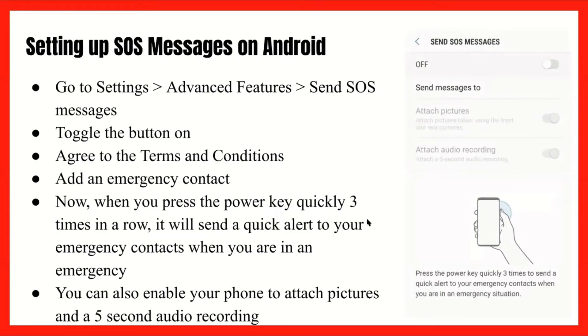First, we'll go over how to turn on SOS for Android. You would do this by going to your Settings app, then go to Advanced Features and Send SOS Messages. Then you would toggle the button on — in the picture on the right where it says off, you would just press that little button to the right of it to turn it on, agree to the terms and conditions, and then add an emergency contact. This is who the message would be going out to if you use the service.